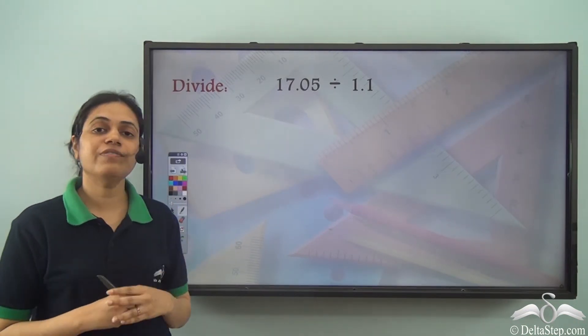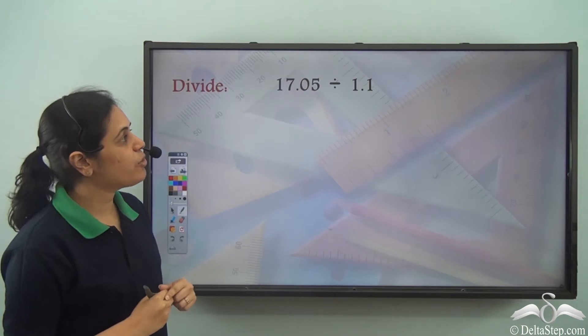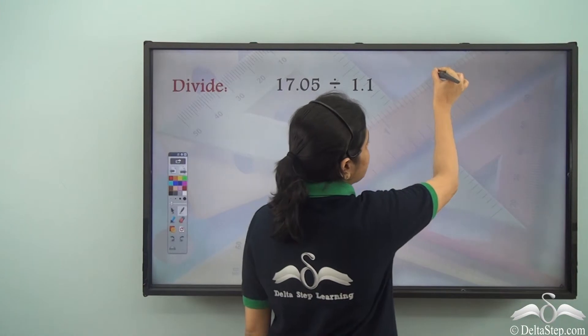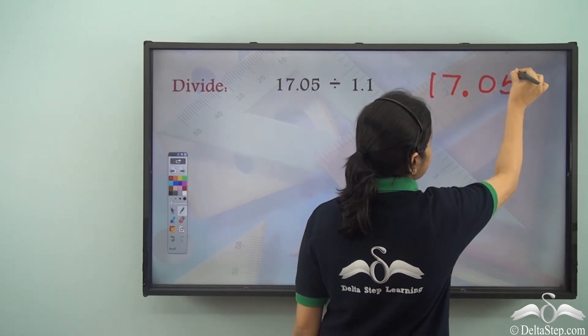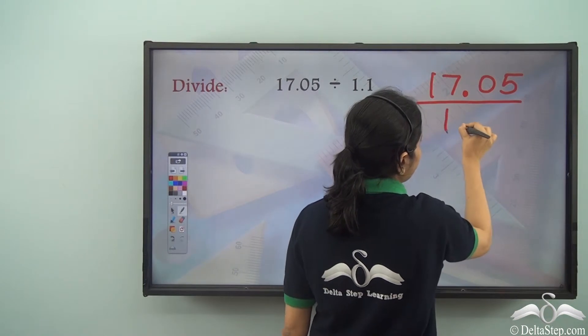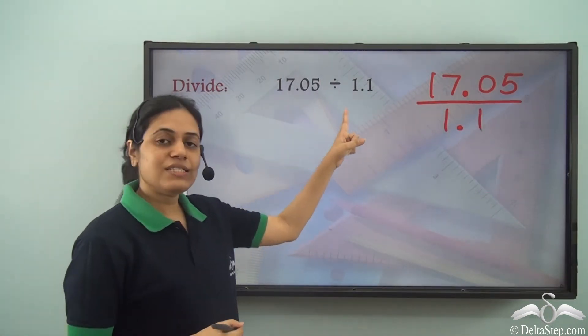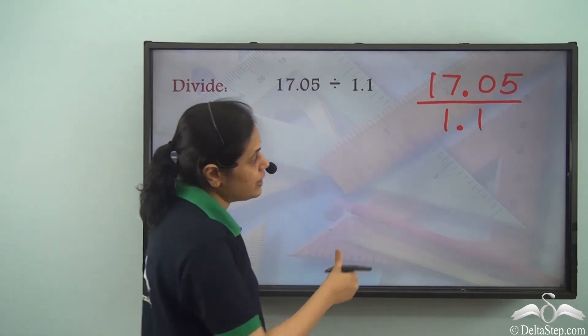So now can you divide this on your own? What is 17.05 divided by 1.1? So I have 17.05 divided by 1.1. Now the divisor has a decimal point. So first I need to remove the decimal point.